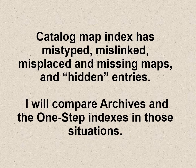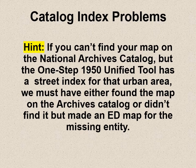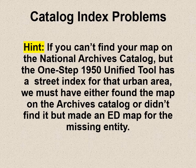It turns out the National Archive Catalog has problems: there are mistyped, mislinked, misplaced, and missing maps — and there are hidden maps. I'm going to show you by comparing the archives and the One-Step indexes. If you can't find your map on the National Archives Catalog, but the One-Step unified tool for 1950 has a street index for that area, we must have either found the map on the catalog, or didn't find it, but made our own ED map for the missing entity.